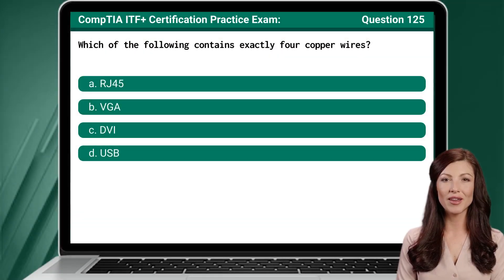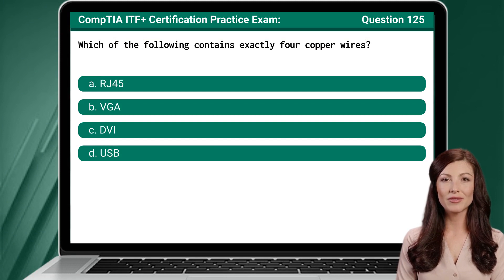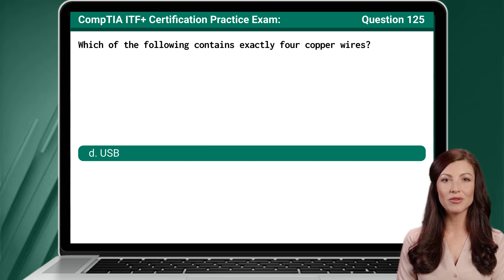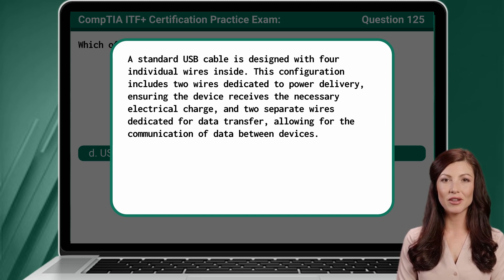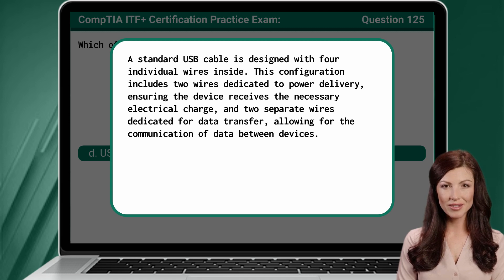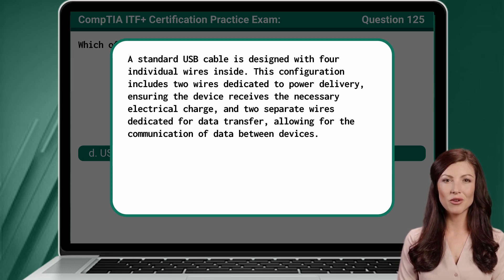Question 125. Which of the following contains exactly four copper wires? The answer is D. USB. A standard USB cable is designed with four individual wires inside. This configuration includes two wires dedicated to power delivery, ensuring the device receives the necessary electrical charge, and two separate wires dedicated for data transfer, allowing for the communication of data between devices.